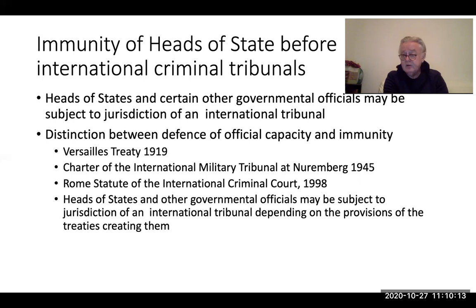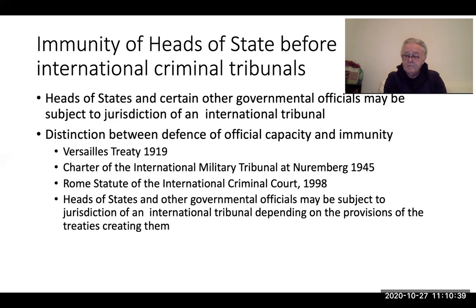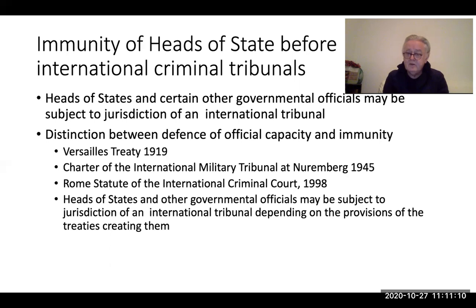The Commission on Responsibilities at the Paris Peace Conference decided the Kaiser could not be tried for starting the war, but the heads of government subsequently reversed that and inserted into the Treaty of Versailles that Kaiser Wilhelm II was to be charged and tried before an international tribunal. However, since Germany ratified that treaty, this only demonstrates that a state can waive immunity — it does not prove anything about customary international law.